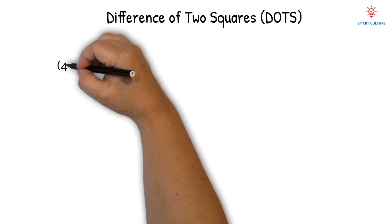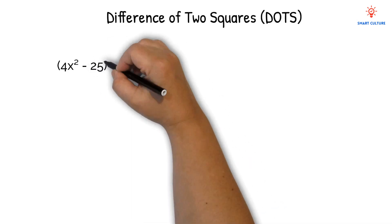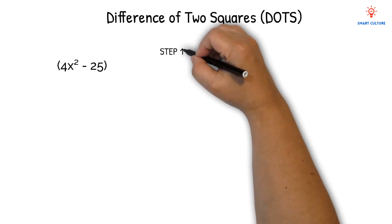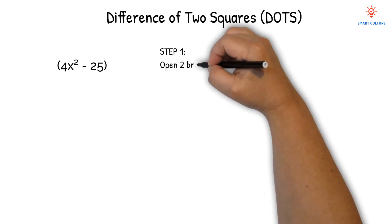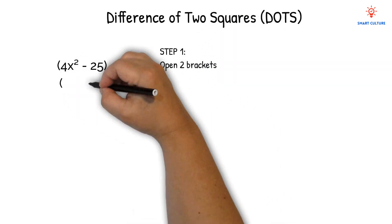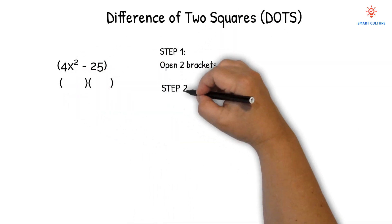Consider the expression 4x squared minus 25. What is step 1? Open two brackets. Then step 2: